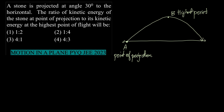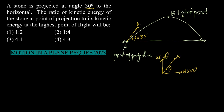When an object is projected from A at an angle theta — which according to the question is 30 degrees — with a velocity u, we know that this velocity u will have two components: the horizontal component u cos theta and the vertical component u sin theta.